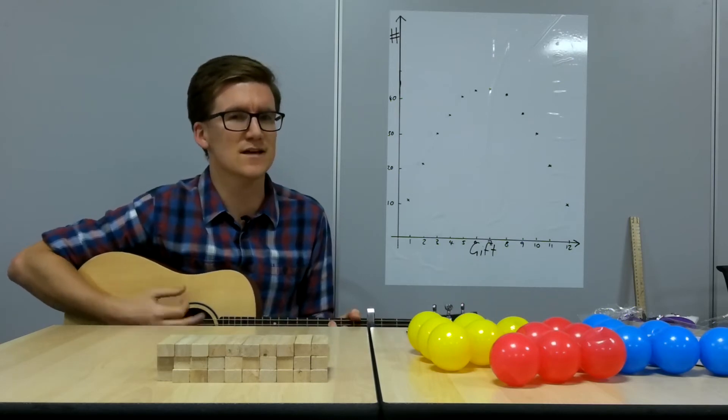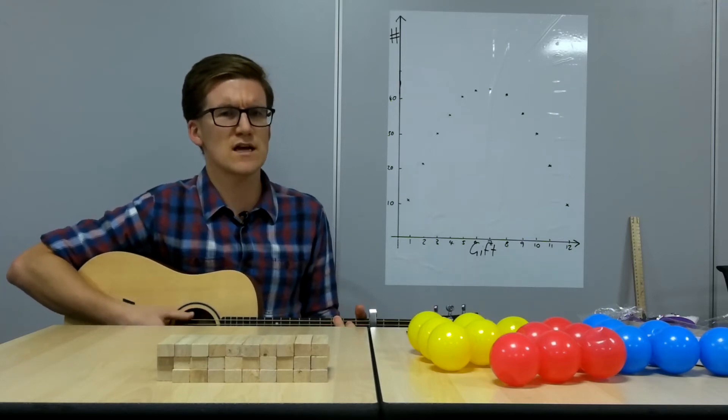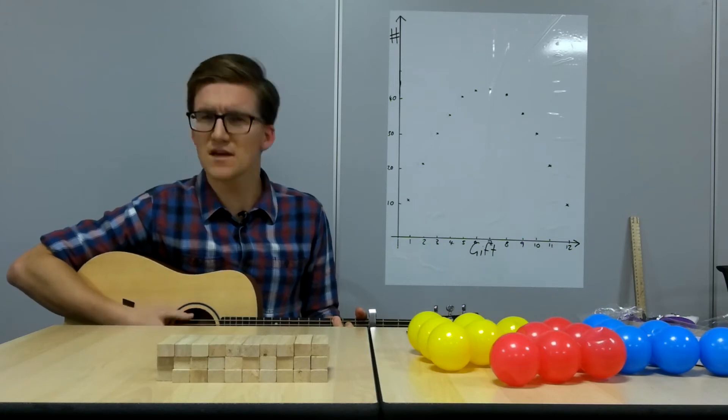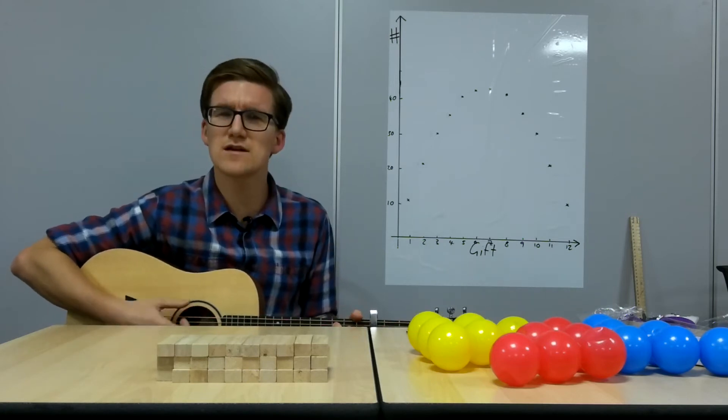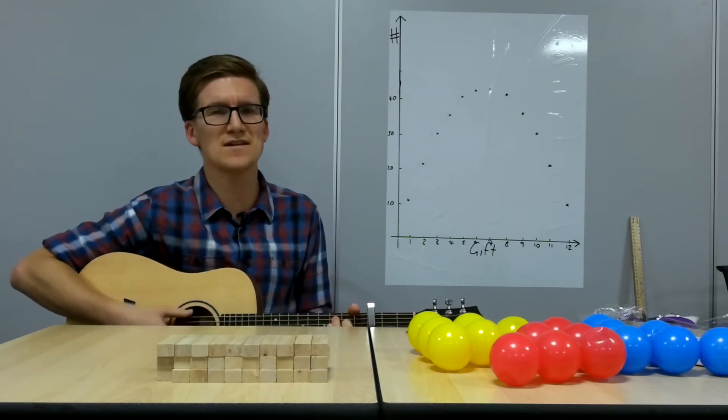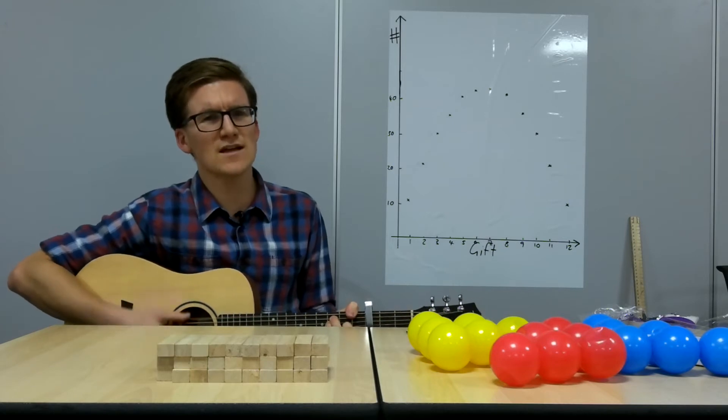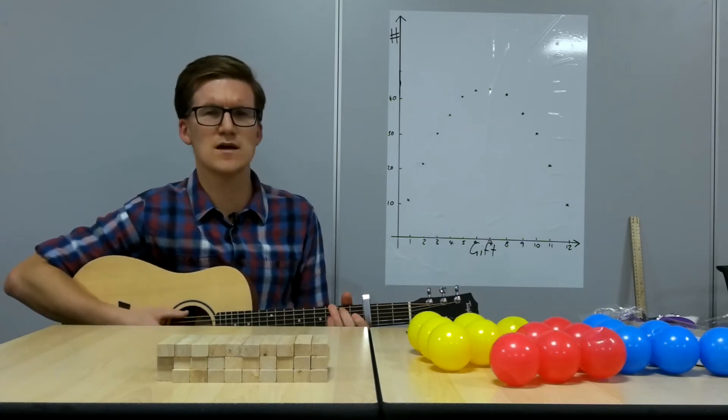On the first day of Christmas, my true love gave to me a partridge in a pear tree. Sing along at home. On the second day of Christmas, my true love gave to me two French hens, two turtle doves and a partridge in a pear tree. It helps if you know it. On the third day of Christmas, my true love gave to me three French hens, two turtle doves and a partridge in a pear tree.